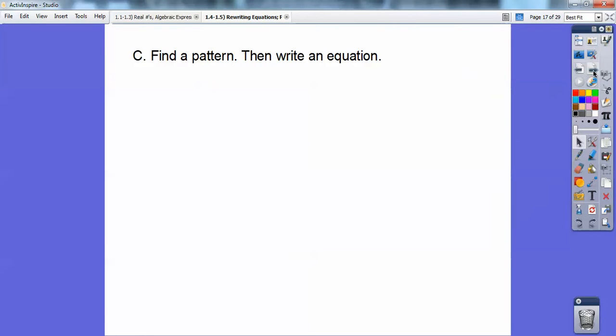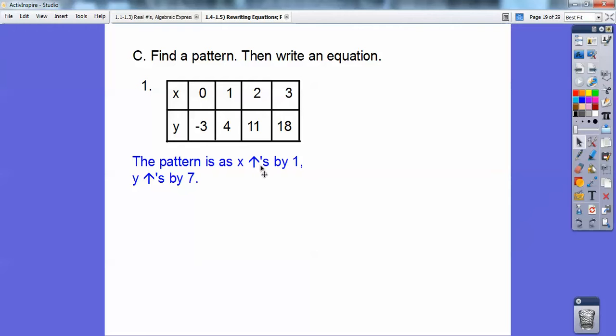So find a pattern and then write an equation. We're going to be given this chart right here and find a pattern. Look as x is going up, plus 1, plus 1, plus 1. What's y doing? Y is going up from here to here, it went plus 7. Here to here, plus 7, plus 7. So as x goes up by 1, and I have as x increases by 1, y is increasing by 7. So that's the pattern right there. And then remember y = mx + b, so we're going to write an equation. Remember the slope formula, y2 - y1 over x2 - x1.